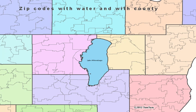The last zip code boundary product we have is zip codes with water and with county. These represent zip code polygons that have water removed from them. As you can see, Lake Winnebago is removed, and they do have county lines. These are shown in dark gray.